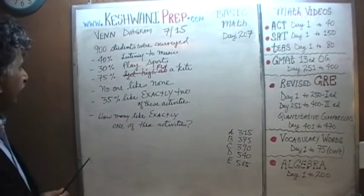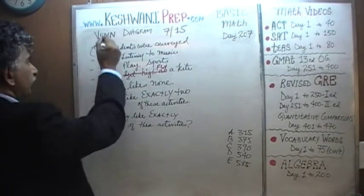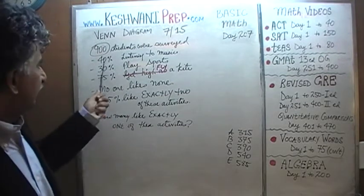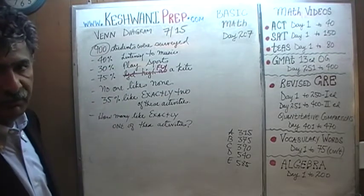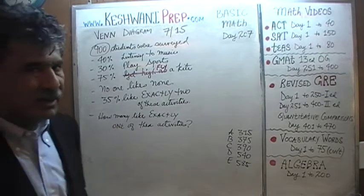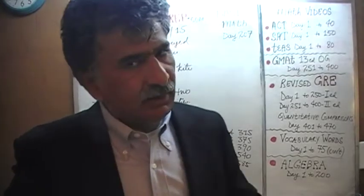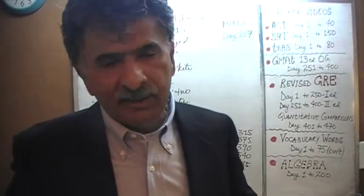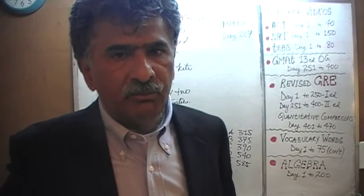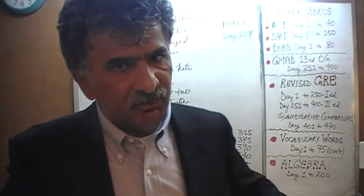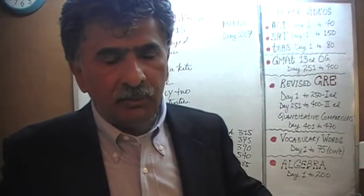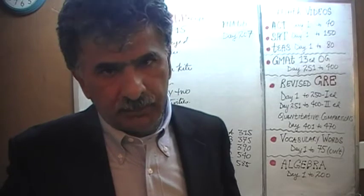Let's add up all these figures. They're telling us we have 900 students, but it's not necessary to calculate 40% of 900, 30% of 900, and 75% of 900 — that would be an utter waste of time. Instead, pretend there are only 100 students. We'll multiply our answer at the end by 9, magnifying it by a factor of 9.